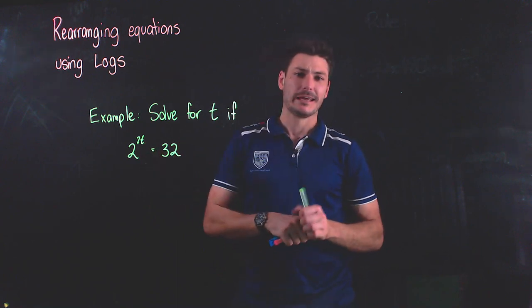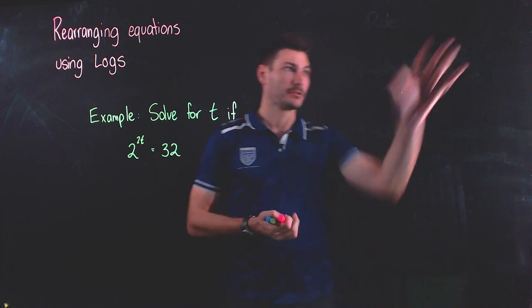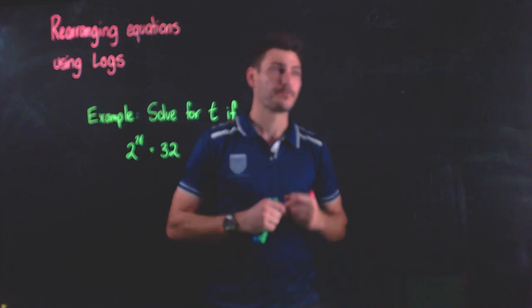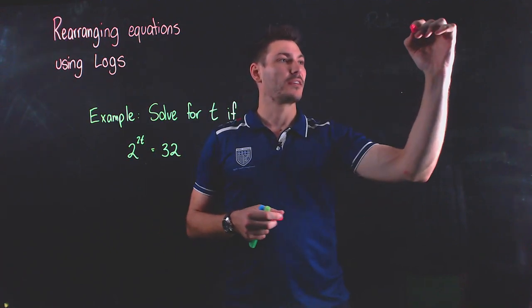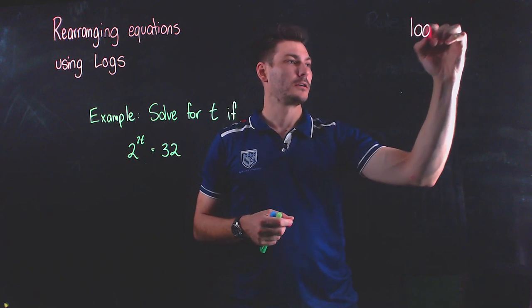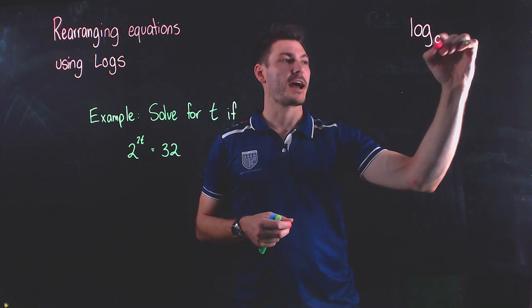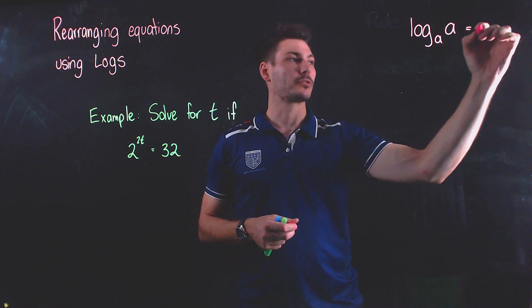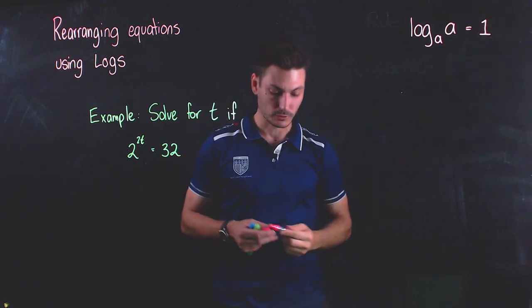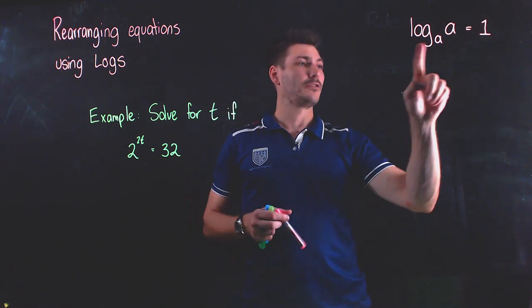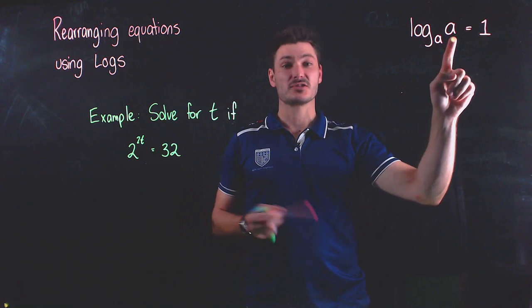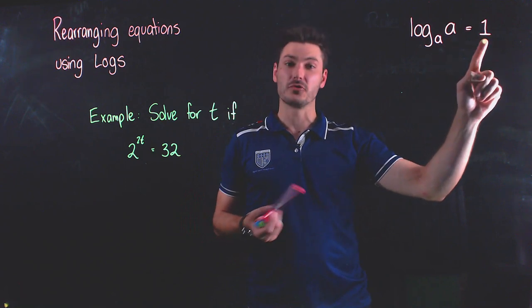So the first thing we're going to do is use a log law and I'm going to write the log law up here so we can refer back to it. But one of the log laws says that log of some base, let's say a, of a is equal to one. That's one of our log laws that we're going to be using. So if you have a log with a base of a to a, it's going to be equal to one.